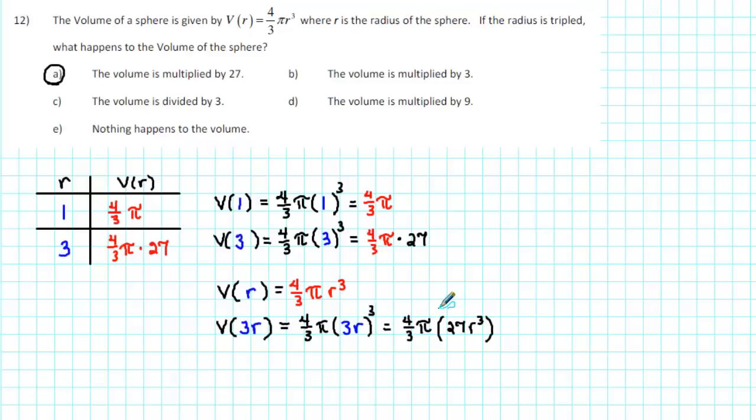Now we want to compare this expression with the original volume. The original volume was (4/3)πr³. In this expression, we have (4/3)π and also a factor of r³, but we have an extra factor of 27. So we'll rewrite this as (4/3)πr³ multiplied by 27.